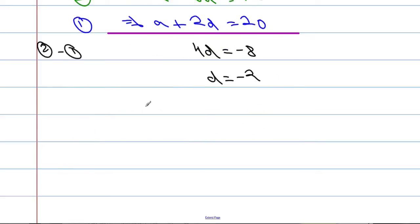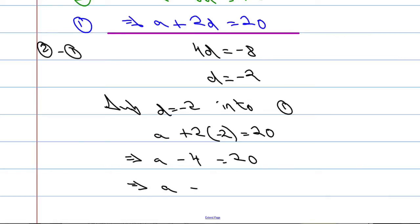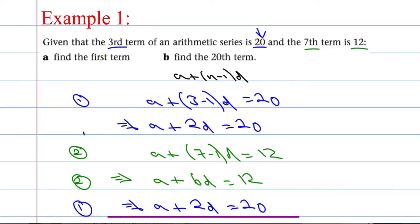Now we know what D is. Let's substitute it back in. D equals negative 2 into equation 1. Hence we get A plus 2 times negative 2 must equal 20, which implies that A subtract 4 equals 20. Which tells us that the first term A must be equal to 24. That was what we were required to do for part A.